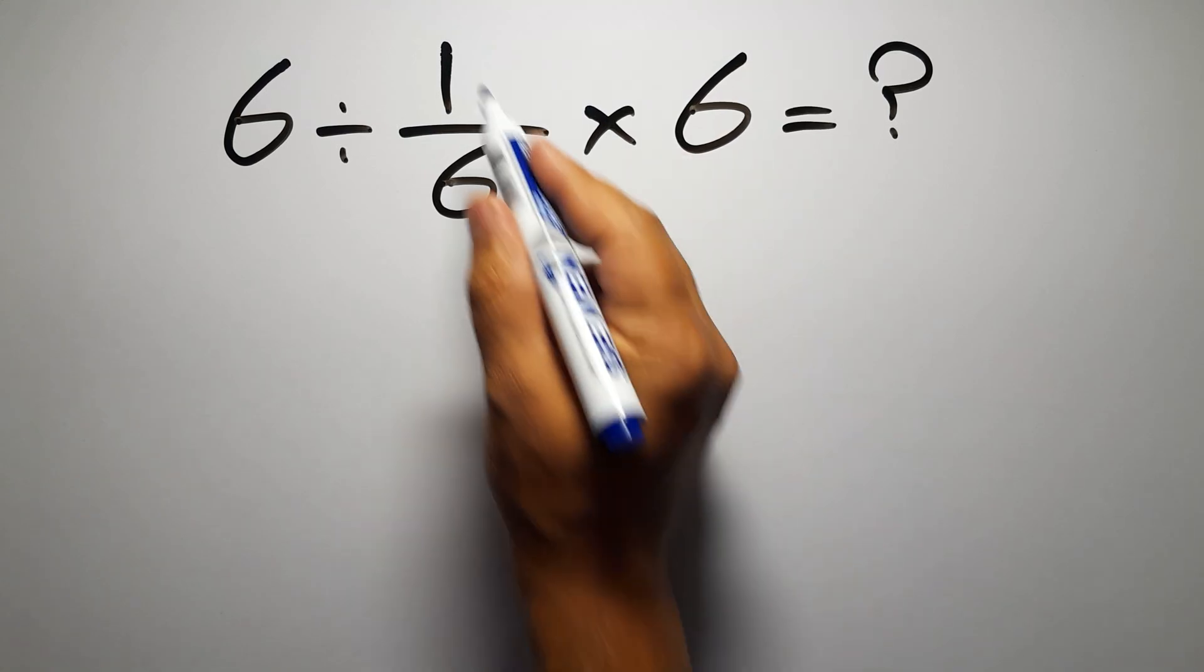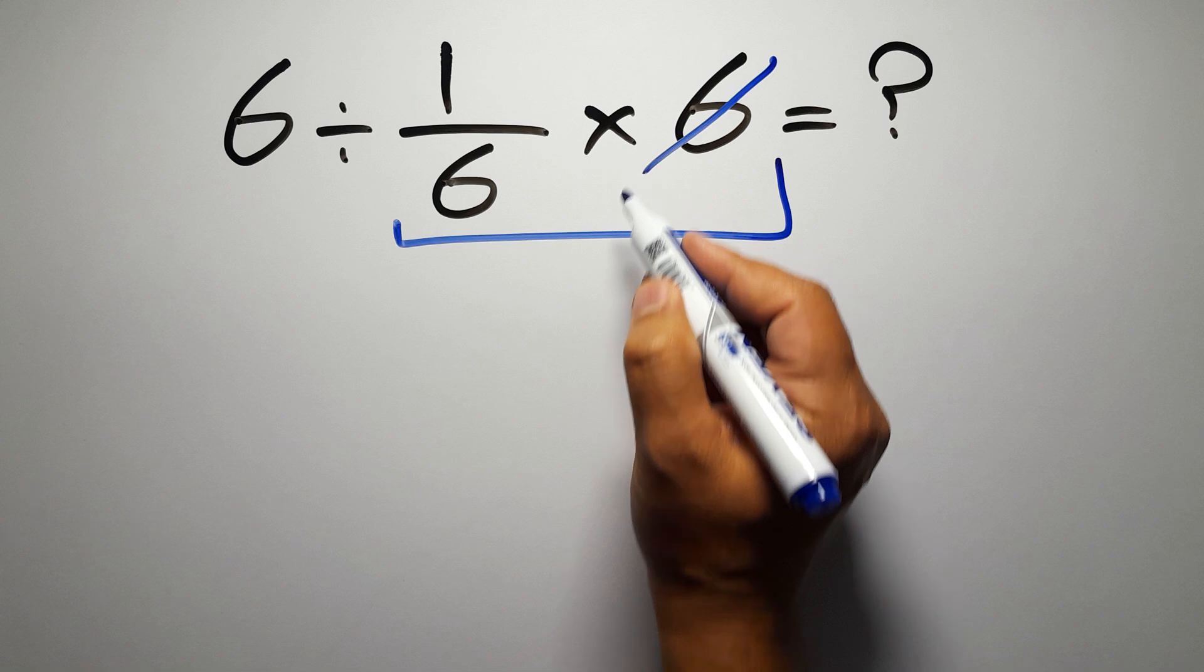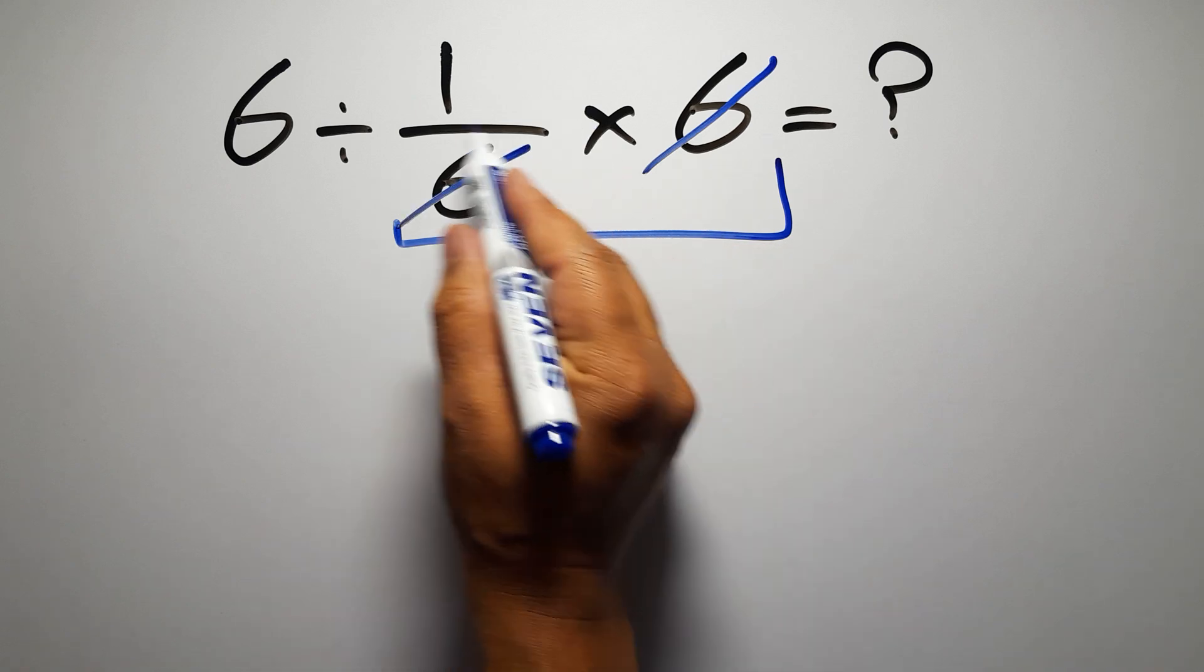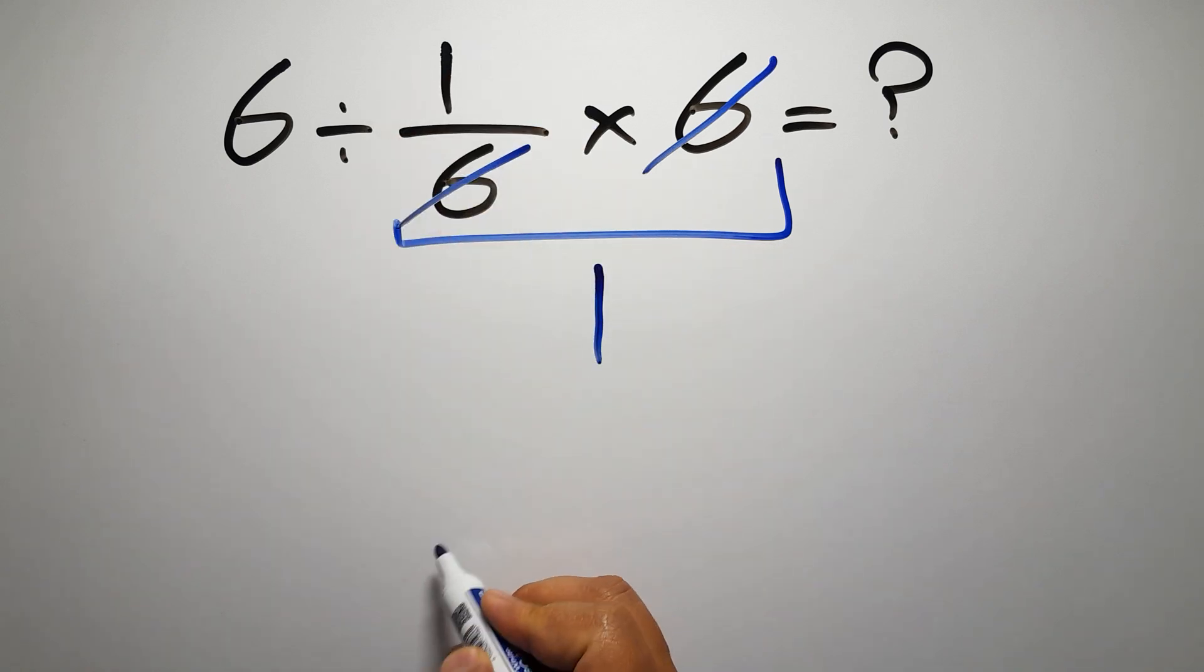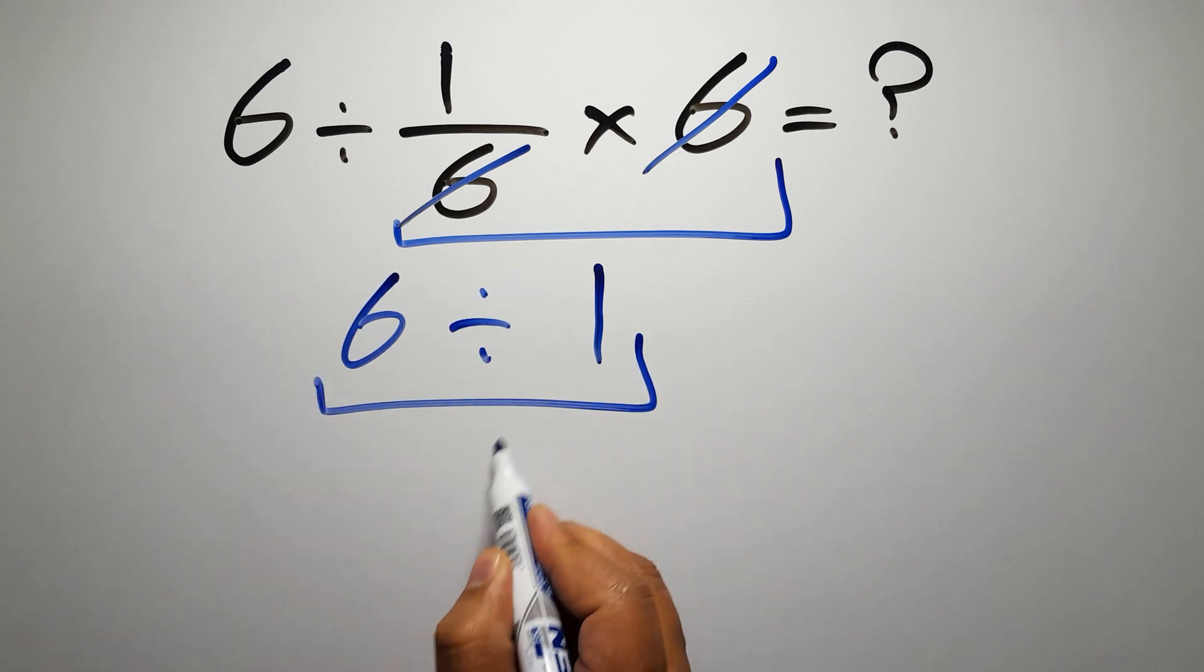First, we do this multiplication: 1 over 6 times 6. We can easily cancel this 6 and this 6, so here we have just 1, and 6 divided by 1 gives us 6. But this answer is not correct because...